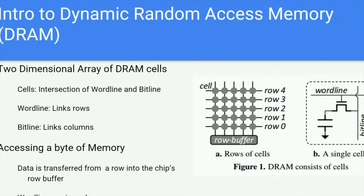DRAM chips consist of a collection of two-dimensional memory arrays known as banks. Each bank consists of DRAM cells where each cell contains a capacitor and access transistor. In each bank there is a row buffer which acts as a fast local cache. Each cell in the row buffer lies at the intersection of a horizontal word line and a vertical bit line. The word line links cells in a particular row, while the bit line connects all cells in a particular column. To access a byte in memory, data needs to be transferred from the row into the row buffer. This occurs when the row's word line receives a high charge, which activates the access transistors within the row, connecting all the capacitors to their respective bit lines.